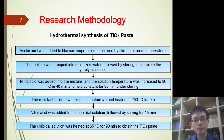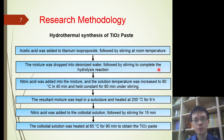As mentioned previously, the titanium dioxide paste was synthesized using the hydrothermal method. First, acetic acid was added to titanium isopropoxide, followed by stirring at room temperature. The mixture was then dropped into deionized water, followed by stirring to complete the hydrolysis reaction. Next, nitric acid was added into the mixture, and the solution temperature was increased to 80 degrees Celsius over 40 minutes and held constant for 80 minutes under stirring.